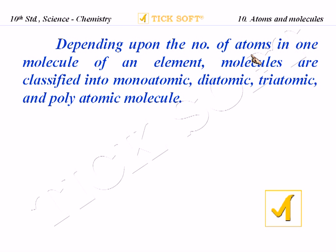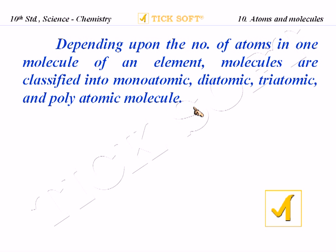Depending upon the number of atoms in one molecule of an element, molecules are classified into monoatomic, diatomic, triatomic, and polyatomic. Now let us study about the types of molecules, especially depending upon the atomicity.